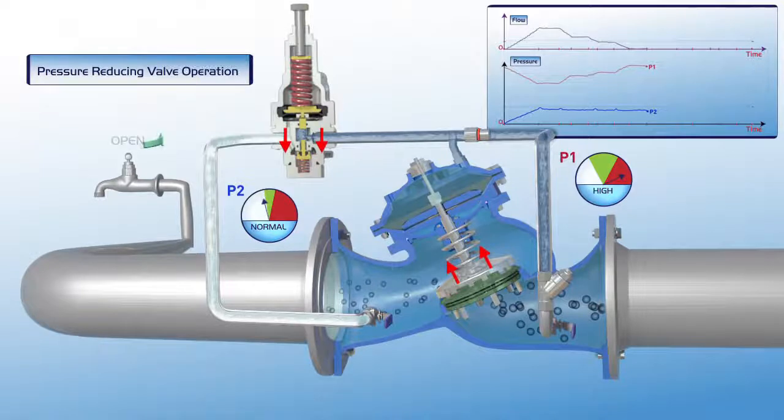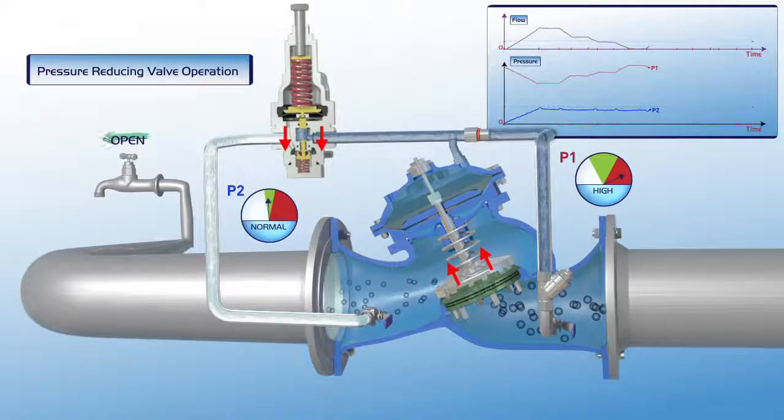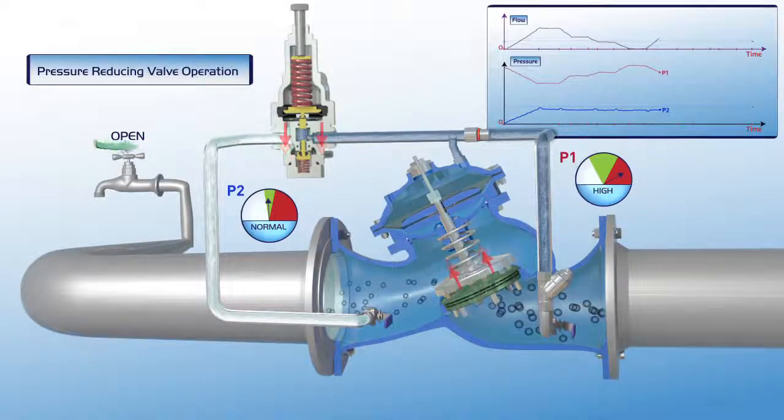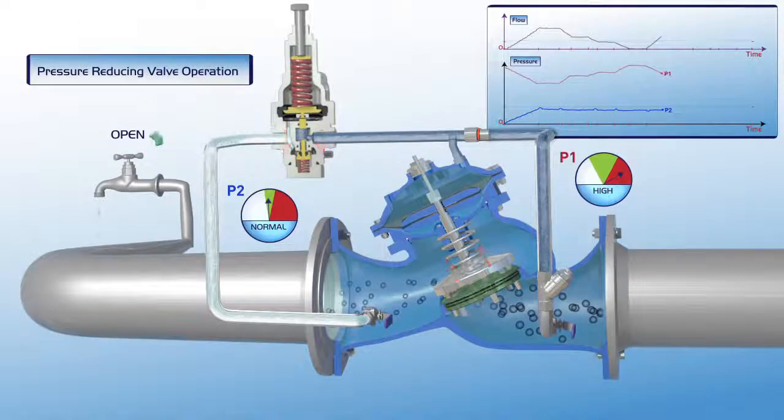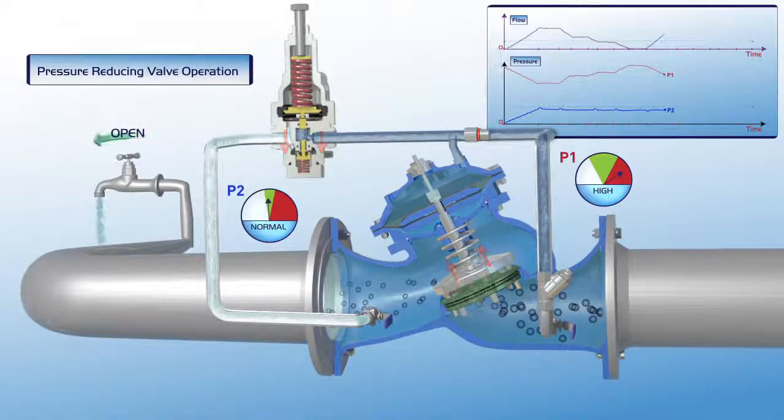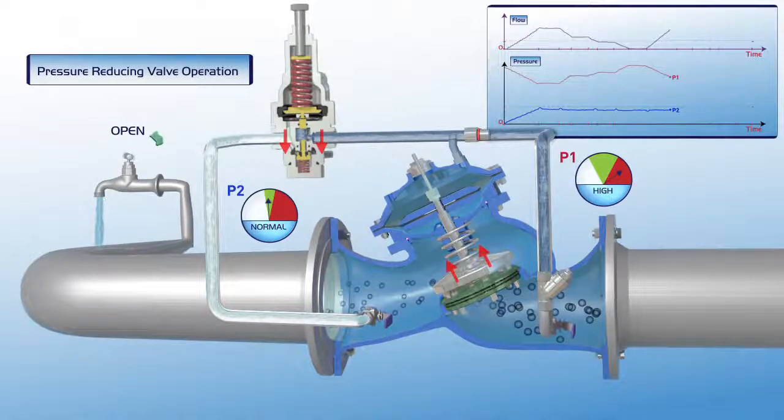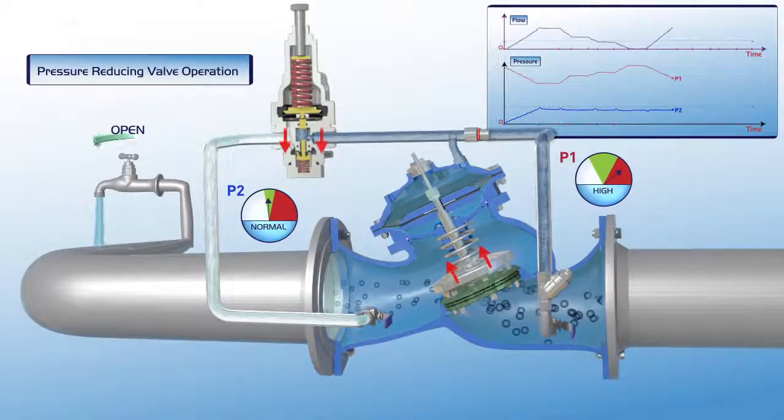When demand increases again, the pilot responds relative to demand level. The plunger moves downwards, the valve gradually opens, and downstream pressure remains stable. On the chart showing increased flow, upstream pressure drops, while P2 downstream pressure remains in its green zone at set point level.